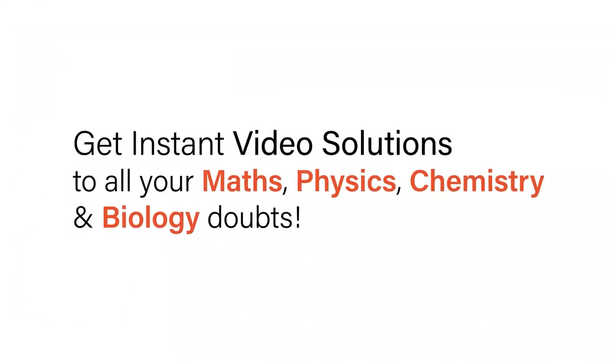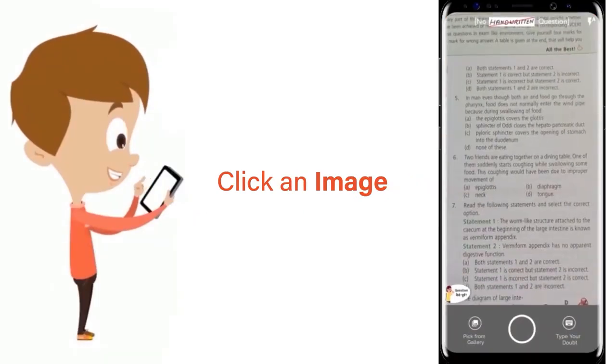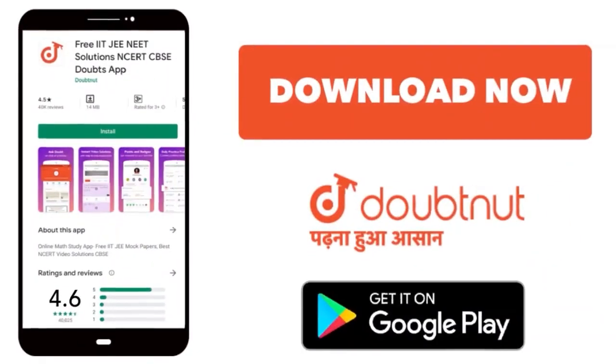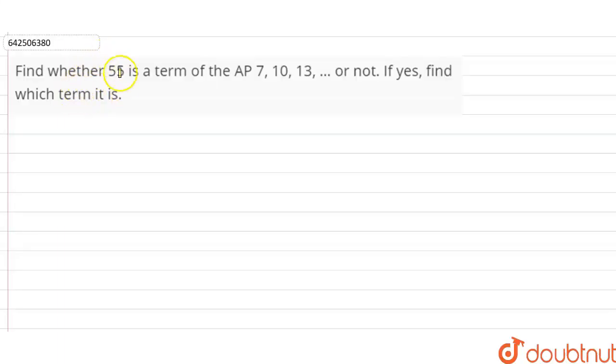With Doubtnut, get instant video solutions to all your maths, physics, chemistry, and biology doubts. Just click the image of the question, crop the question, and get instant video solution. Download Doubtnut app today. Hi students, our question is: find whether 55 is a term of the AP 7, 10, 13, or not. If yes, find which term it is.